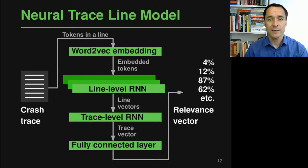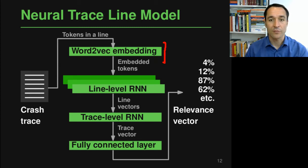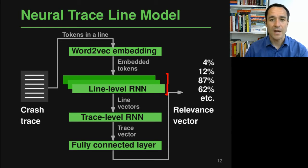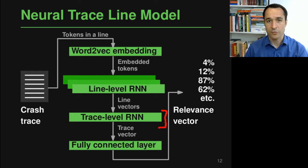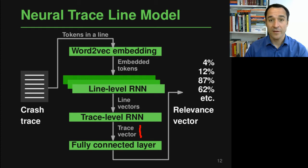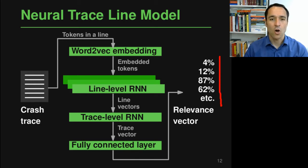Now let's look at how the model actually works. It's a neural model based on deep learning that takes the crash trace as input, considering it line by line and splitting each line into tokens. Each line is encoded using a word2vec embedding pre-trained on the traces, giving a sequence of embedded tokens per line. Each of these lines is then fed through a recurrent neural network, an RNN, giving a sequence of line vectors. These line vectors are summarized using another RNN called the trace-level RNN, which summarizes the entire trace into a trace vector. Finally, this trace vector is fed into a fully connected layer which predicts the relevance vector of the crash trace.